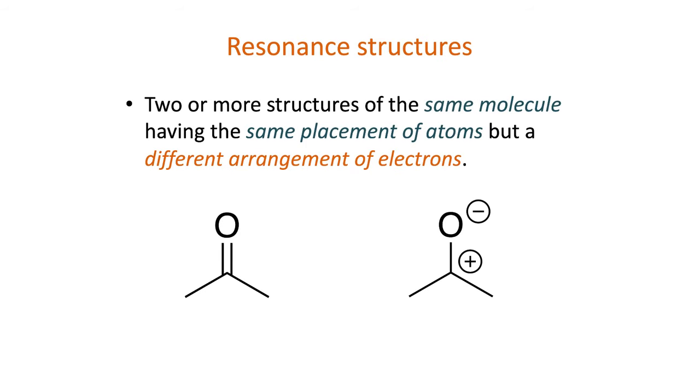Resonance structures are two or more structures of the same molecule, having the same placement of atoms but in a different arrangement of electrons, typically only involving pi bonds and non-bonding electrons, or lone pairs.